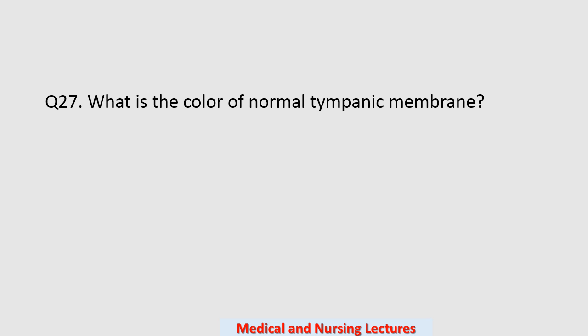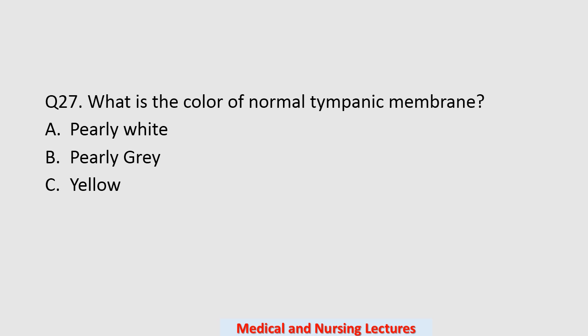Question number twenty-seven: what is the color of a normal tympanic membrane? Options are purely white, purely gray, yellow, or red. The correct option is purely gray.